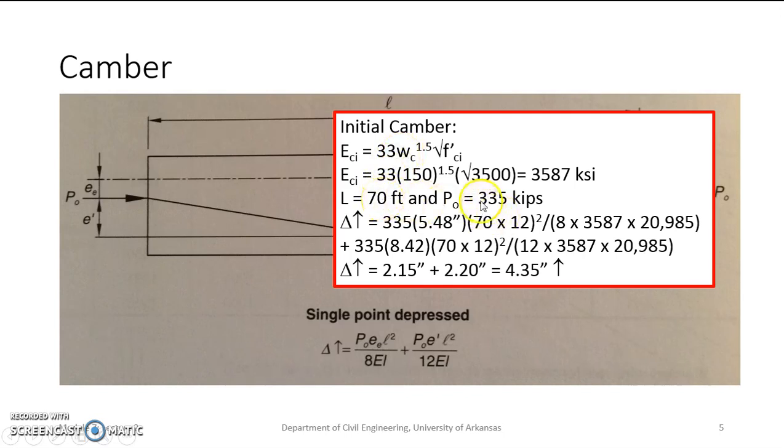We know L is 70 feet. We went back to one of those earlier problems in the PCI Design Handbook that refers back to P0, which is 335 kips. So we have our Ee term, this first point at the ends is 5.48 inches, so 335 times 5.48 times the length times 12 squared to get to inches over 8 times modulus of elasticity times I plus 8.42 - that's the distance from here to here - times 335 times our 70 times 12 squared over 12 times E times moment of inertia. We get an upward camber of 4.35 inches.